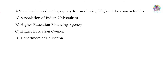A state-level coordinating agency for monitoring higher education activities. The options include Association of Indian Universities, higher education financing agency, higher education council, and department of education. The answer is higher education council — it monitors higher education activities at the state level.